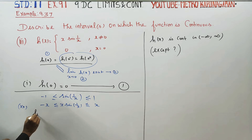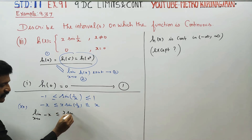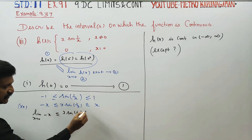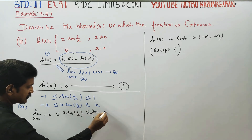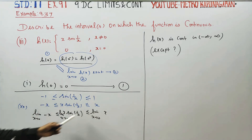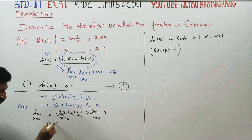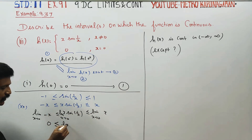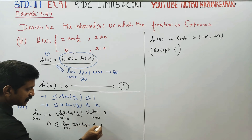Apply the limit to all terms. As x tends to 0: limit of (minus x) ≤ limit of x·sin(1/x) ≤ limit of x. As x turns to 0, the left side is 0 and the right side is 0, so 0 ≤ limit of x·sin(1/x) ≤ 0.